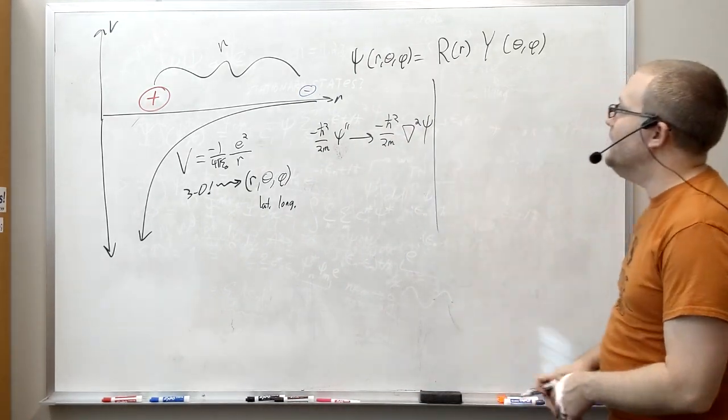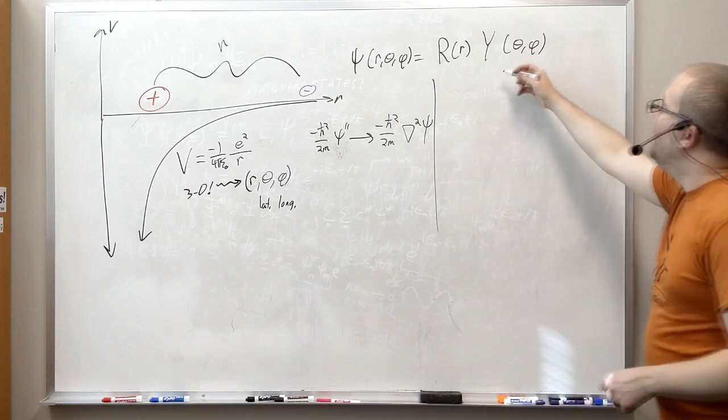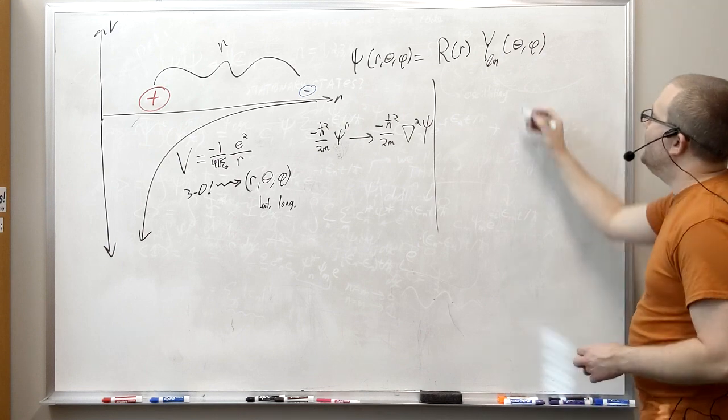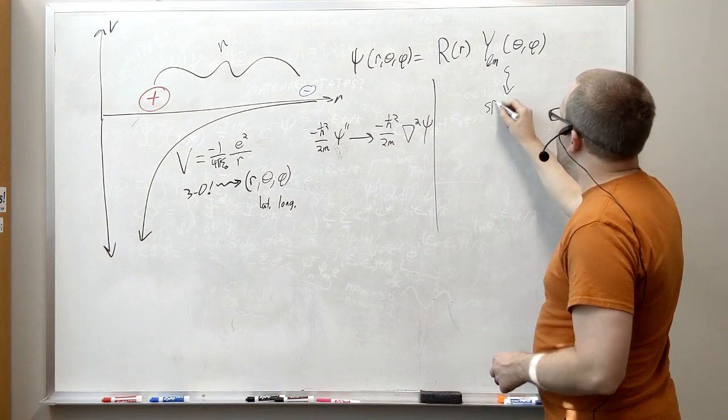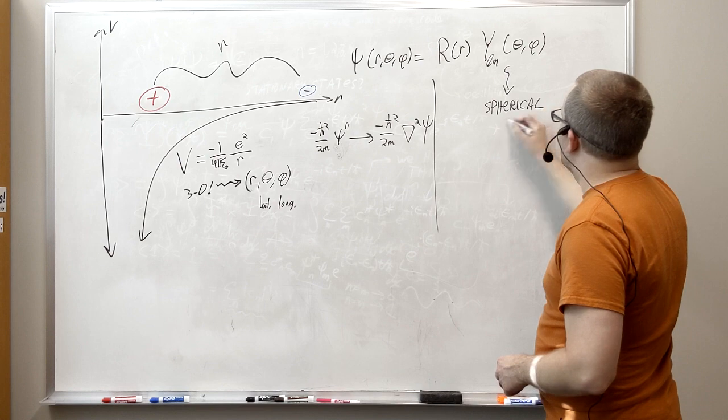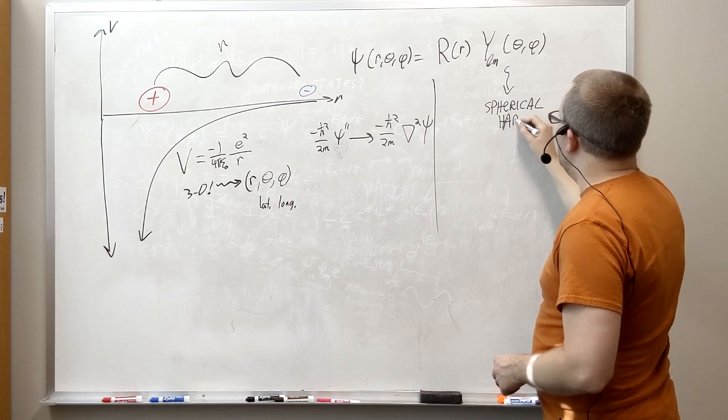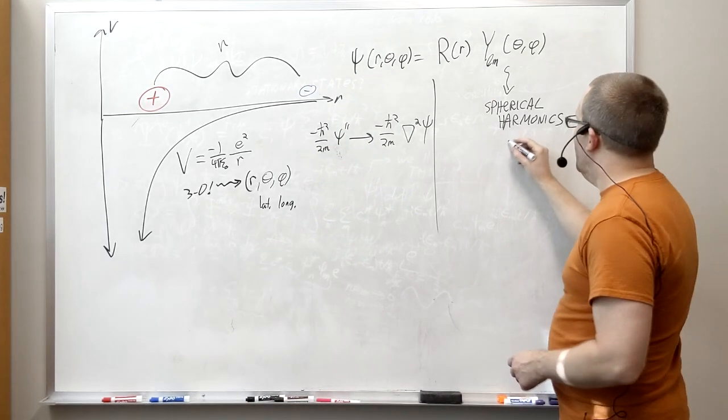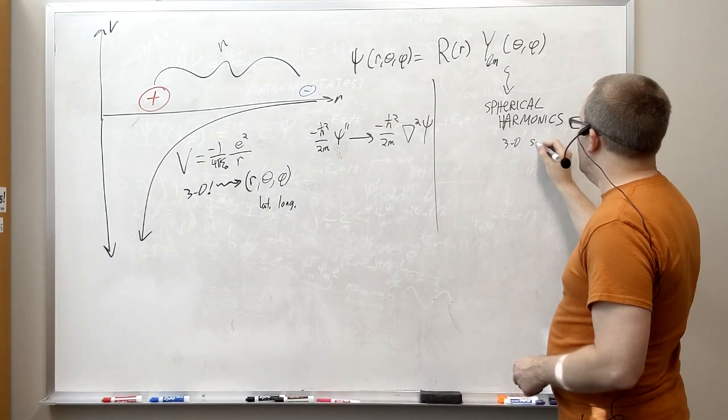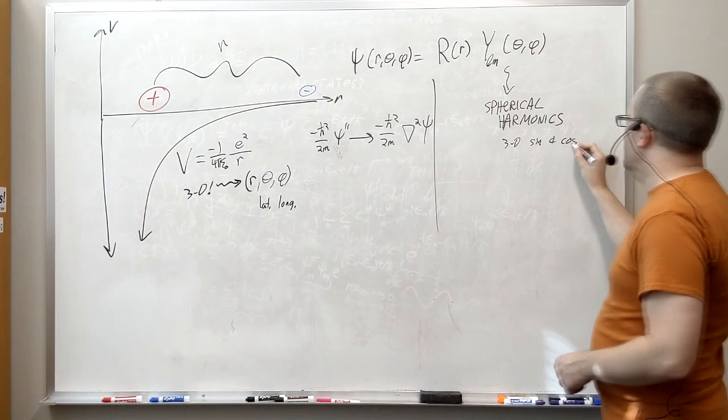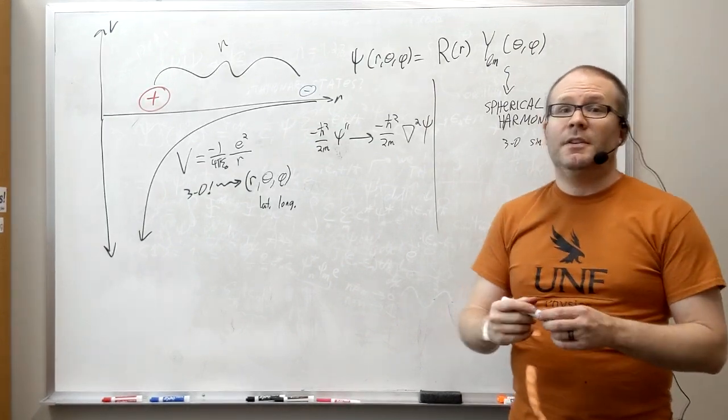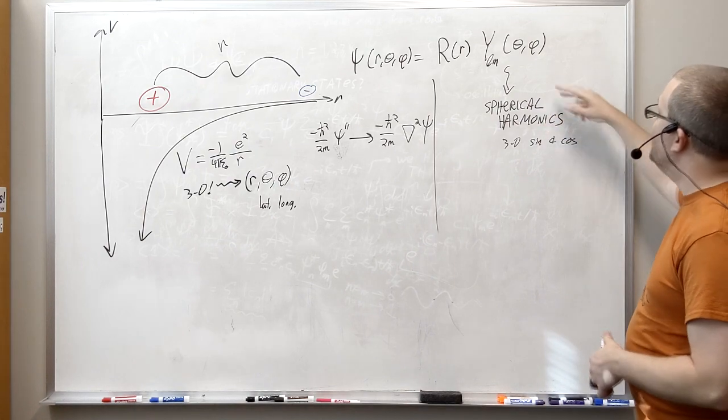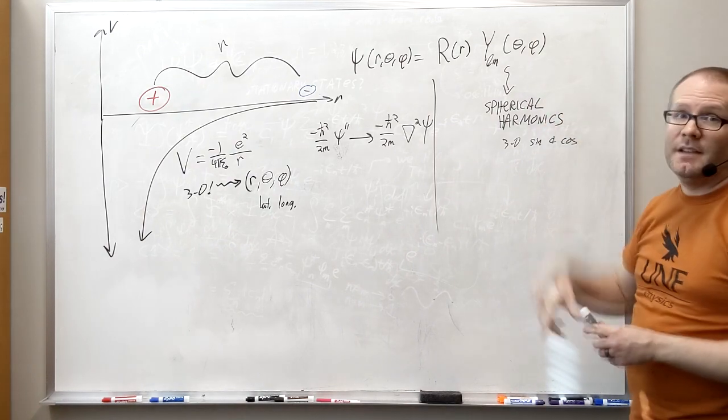Turns out this is a really great strategy. The Y here ends up getting labeled by two integers l and m. We call this thing the spherical harmonics. We're going to take a look at those in a code to visualize them, but these are literally just 3D versions of the sine and cosine function. In fact, they're built out of sines and cosines of theta and phi.